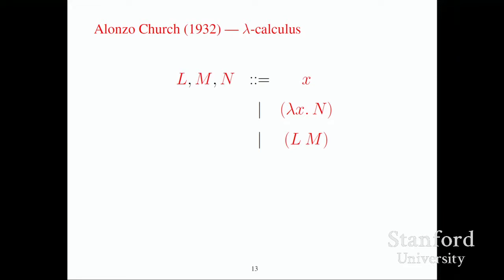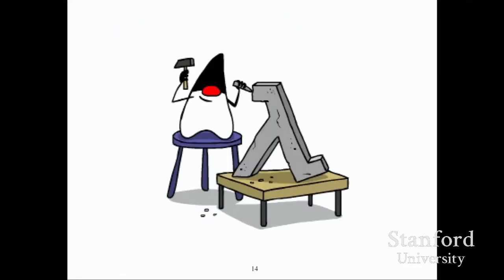People in industry ignored lambda calculus for years, but all of a sudden it's become trendy. Languages like Java, C++, and Python all say, "we've got lambdas." And there's Duke, the icon for Java, looking rather smug. Well, congratulations, Duke — you've managed to catch up with where Church was in the 1930s.